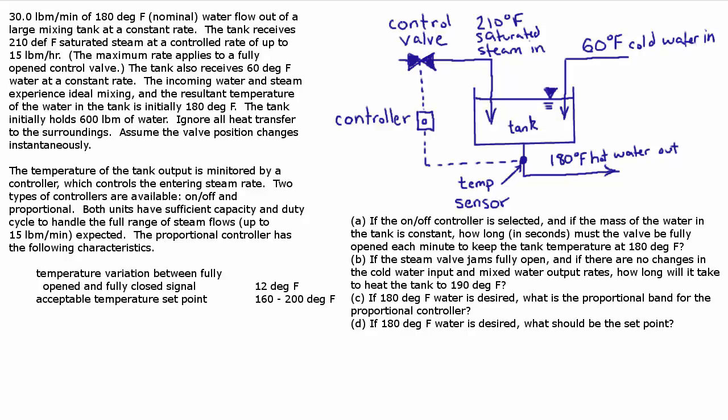The tank also receives 60-degree Fahrenheit water at a constant rate. The incoming water and steam experience ideal mixing, and the resultant temperature of the water in the tank is initially 180 degrees Fahrenheit. The tank initially holds 600 pounds of water. Ignore all heat transfer to the surroundings and assume the valve position changes instantaneously. The temperature of the tank output is monitored by a controller which controls the entering steam rate. Two types of controllers are available: on-off and proportional.